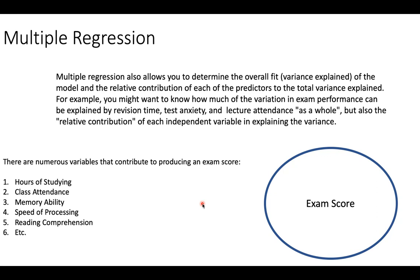The best way to explain this is with an example. Let's say I want to predict your future exam scores, or explain your past exam scores. Let's imagine that this circle represents all of the variables that play into determining your exam score. There are countless variables that could help us predict your exam scores. In a linear regression, I would be trying to predict your exam score using just one variable — maybe hours of studying. That would be a simple linear regression.